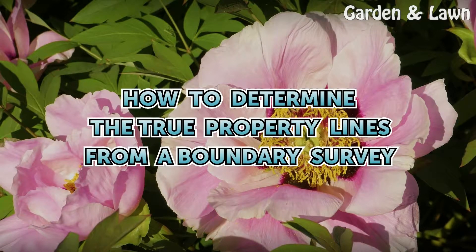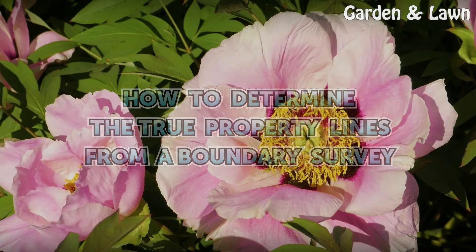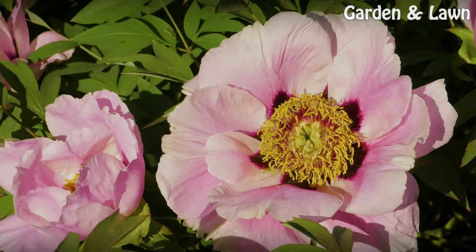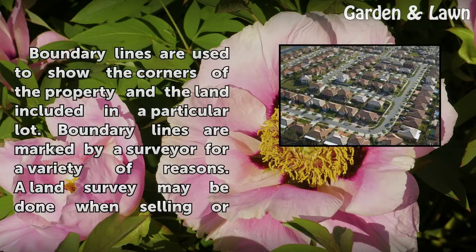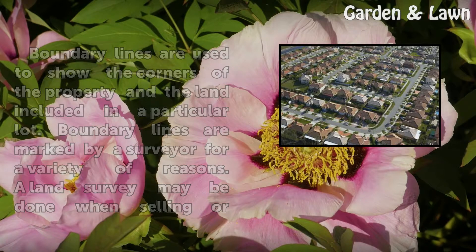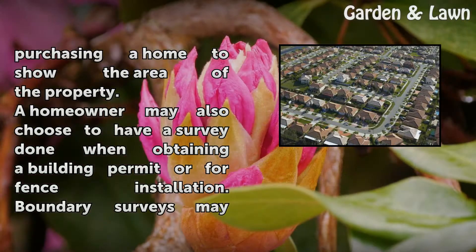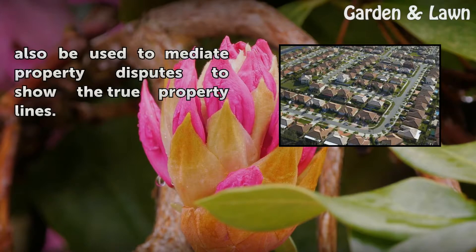How to determine the true property lines from a boundary survey. Boundary lines are used to show the corners of the property and the land included in a particular lot. Boundary lines are marked by a surveyor for a variety of reasons. A land survey may be done when selling or purchasing a home, or when obtaining a building permit or for fence installation. Boundary surveys may also be used to mediate property disputes to show the true property lines.